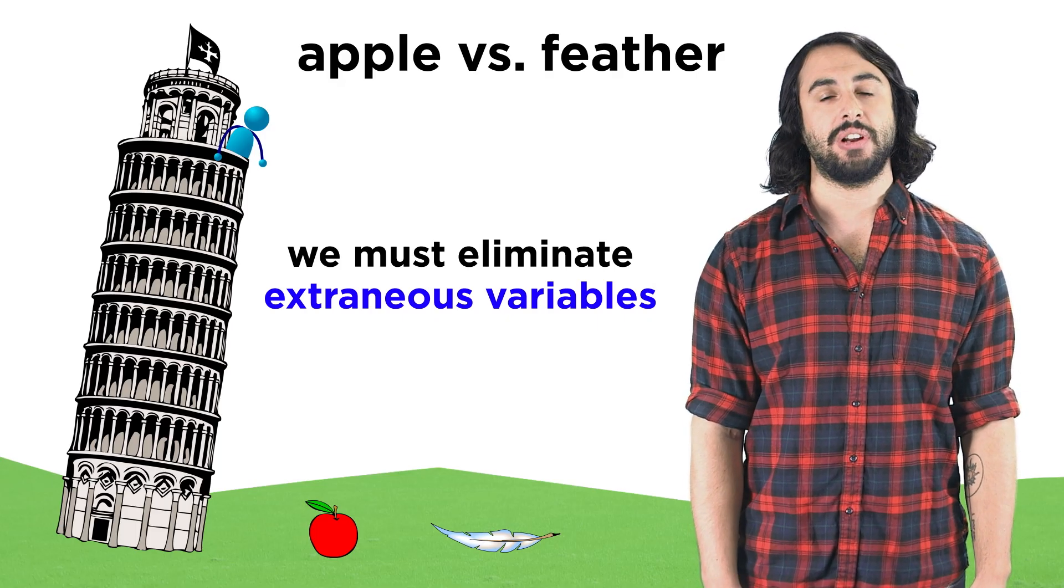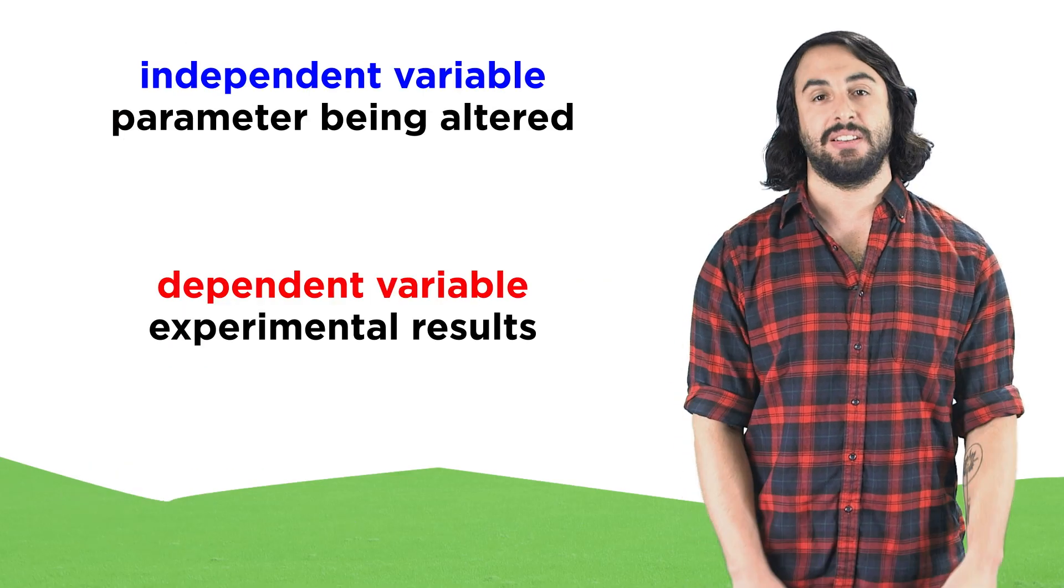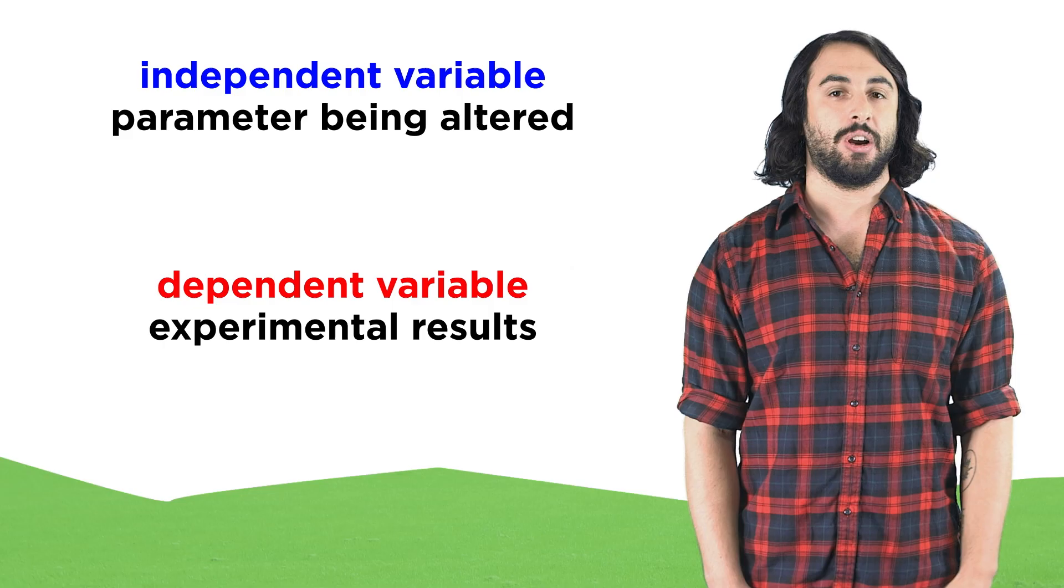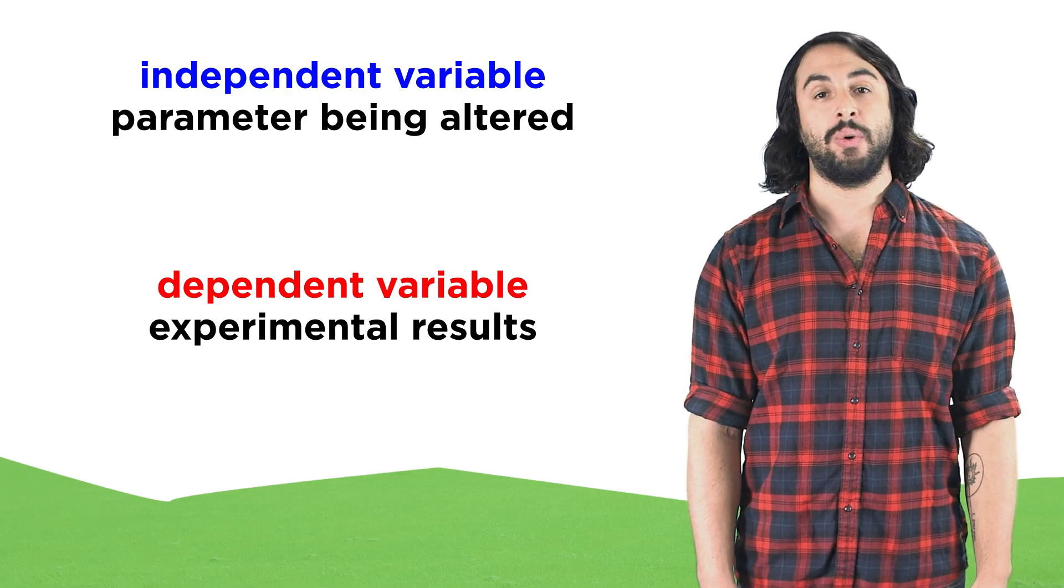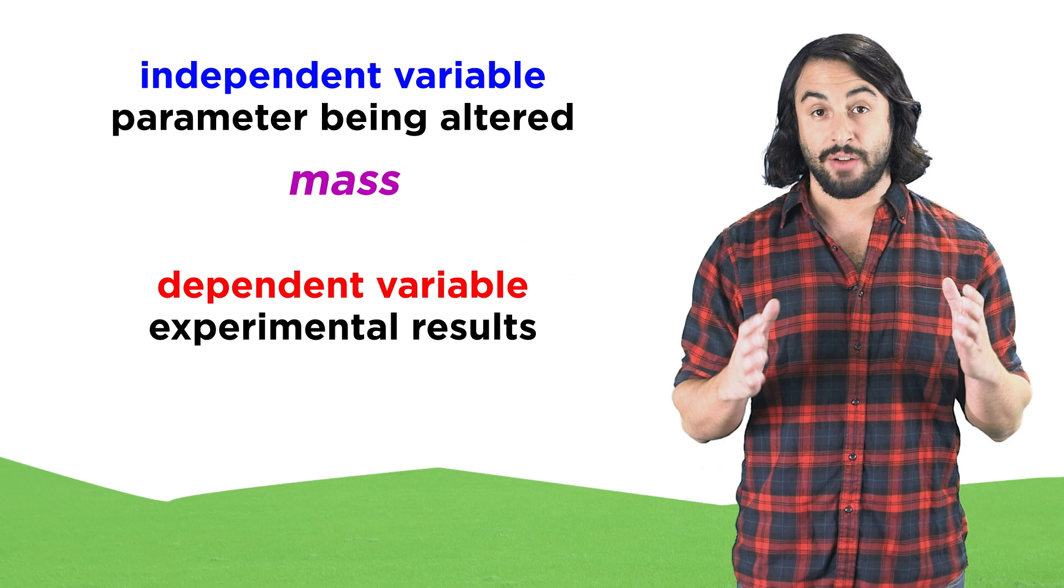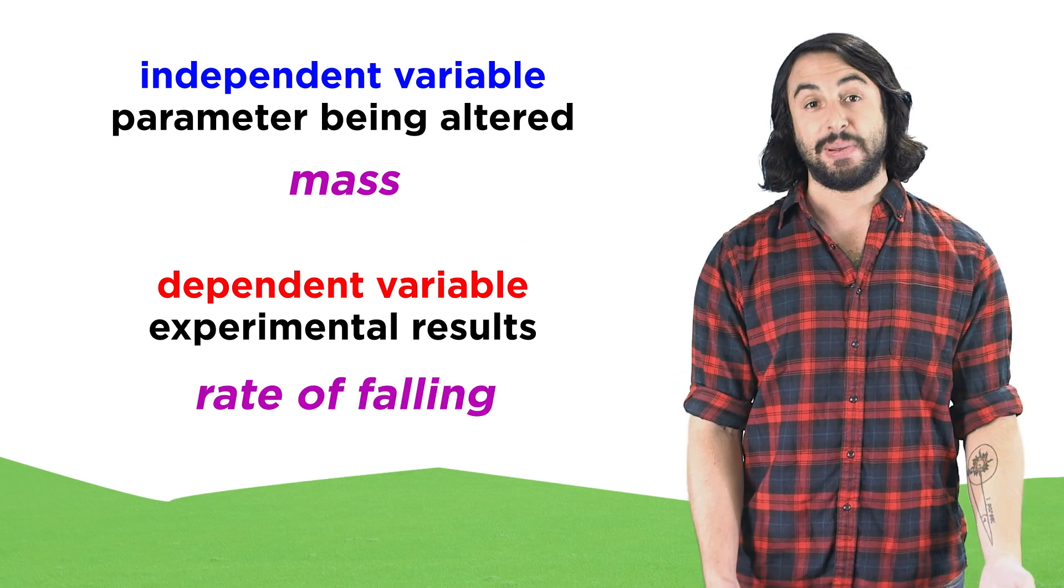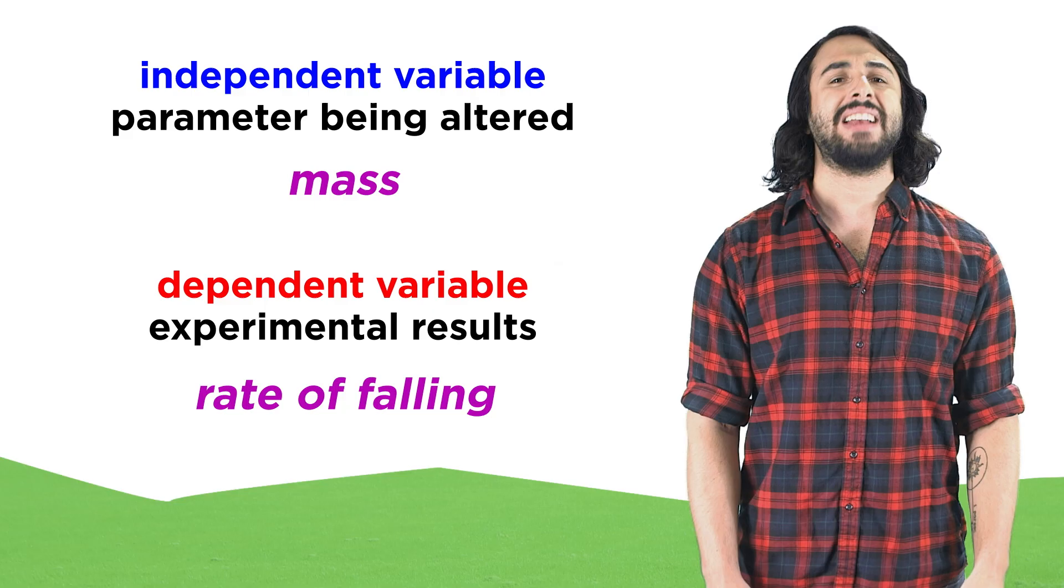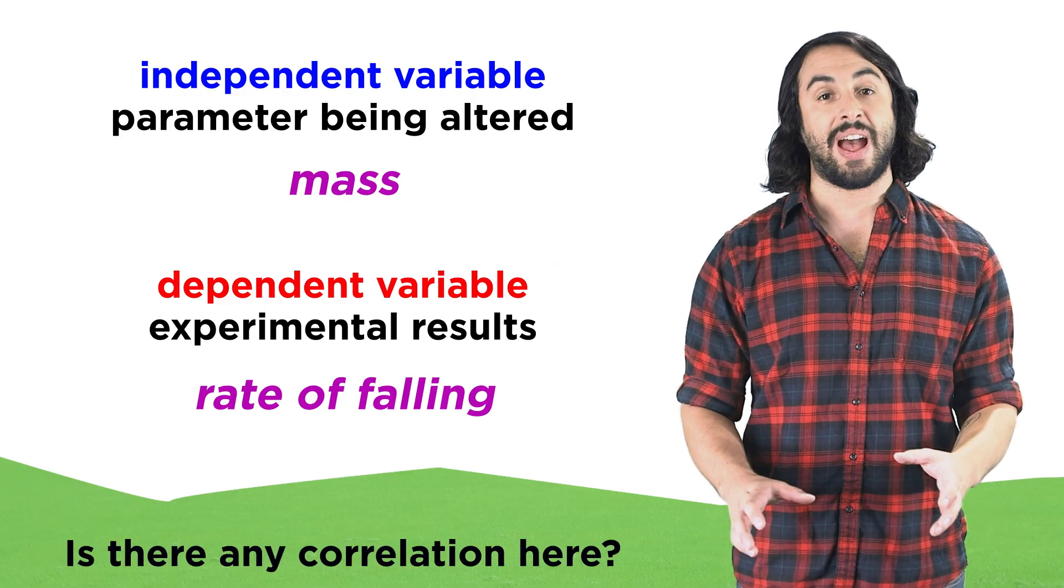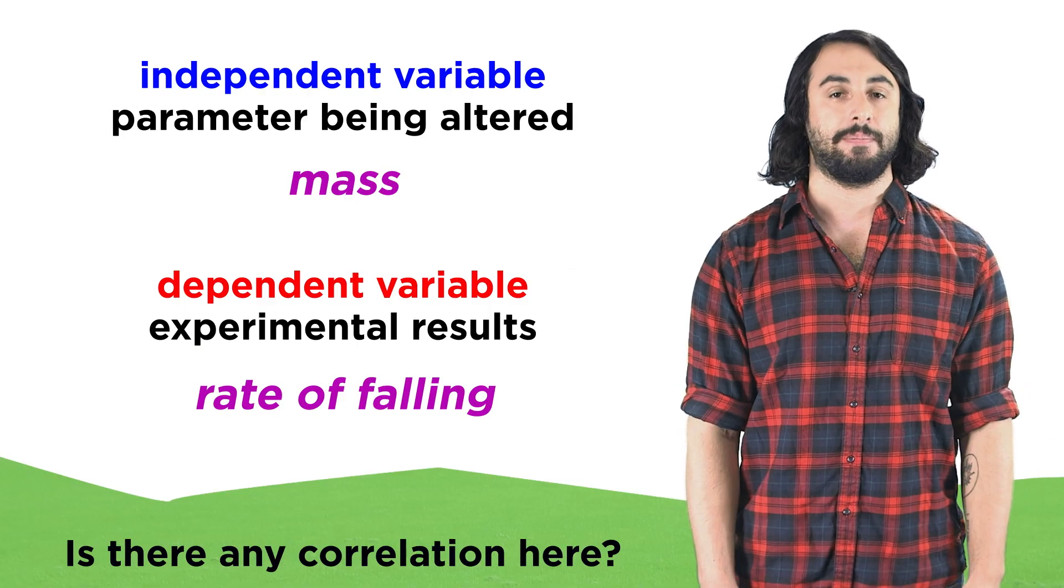When we do science, the ideal situation is to limit an experiment to one independent variable and one dependent variable. The independent variable is the one that we can alter at will, in this case the mass of the object, since we could drop an object of any mass. The dependent variable, in this case the speed at which the object falls, is the one that should change its value based on the value of the independent variable, if there is any correlation between them.